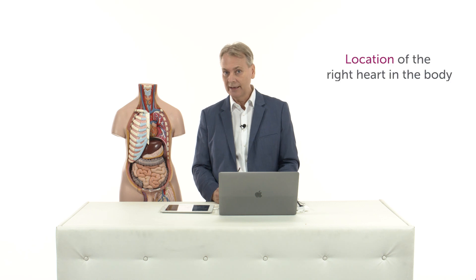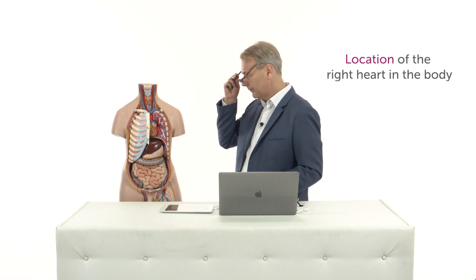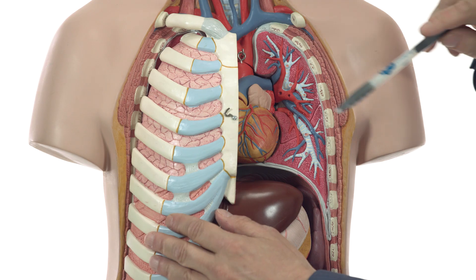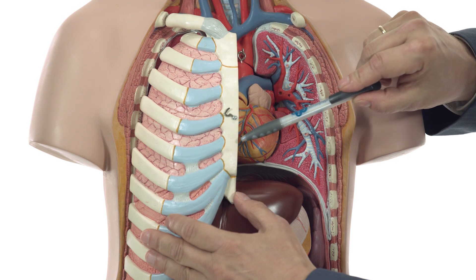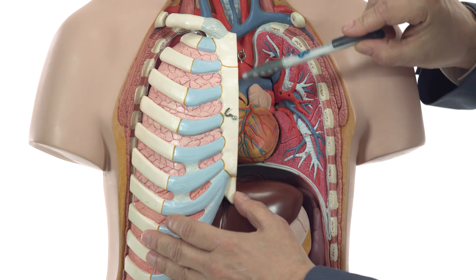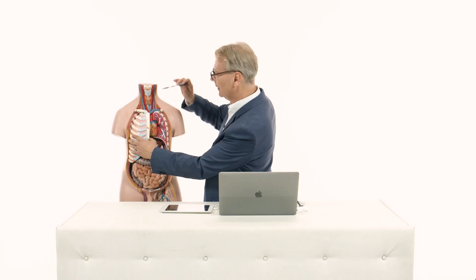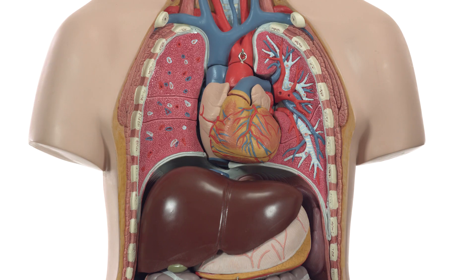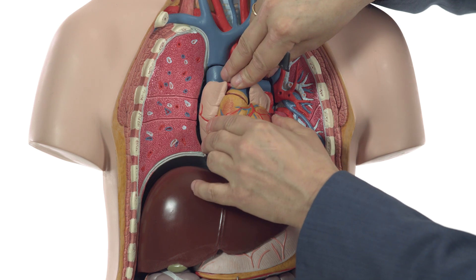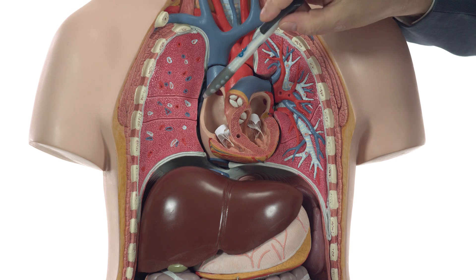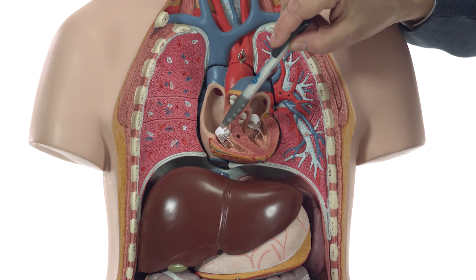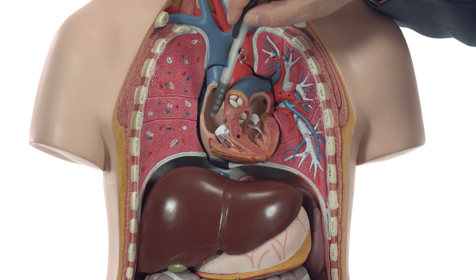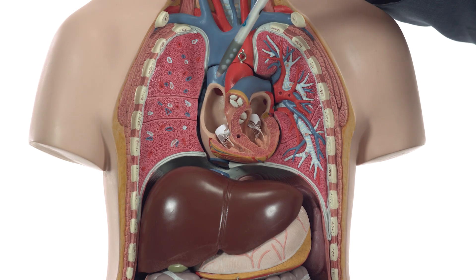Where is the right heart actually located in the chest? Anterior. As you can see here on this model, this is the right heart, and if you look closely you will see that much of the right heart is actually hidden behind the sternum. Let's remove the lung and take a closer look inside the chest. If I open up the model, you can see that the right heart is actually located here in the midline, and that much of the right heart is, as I mentioned before, hidden behind the sternum.